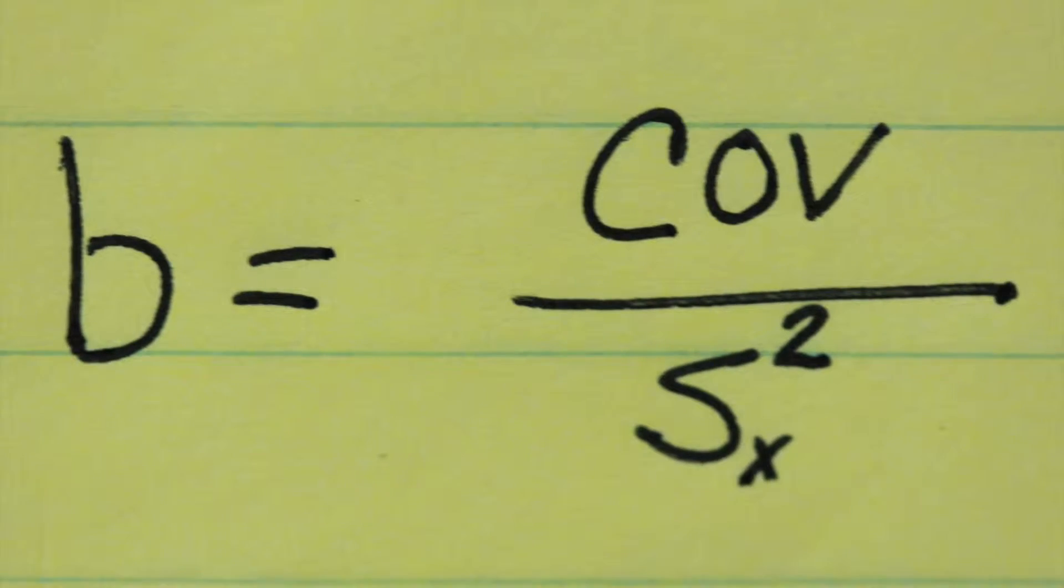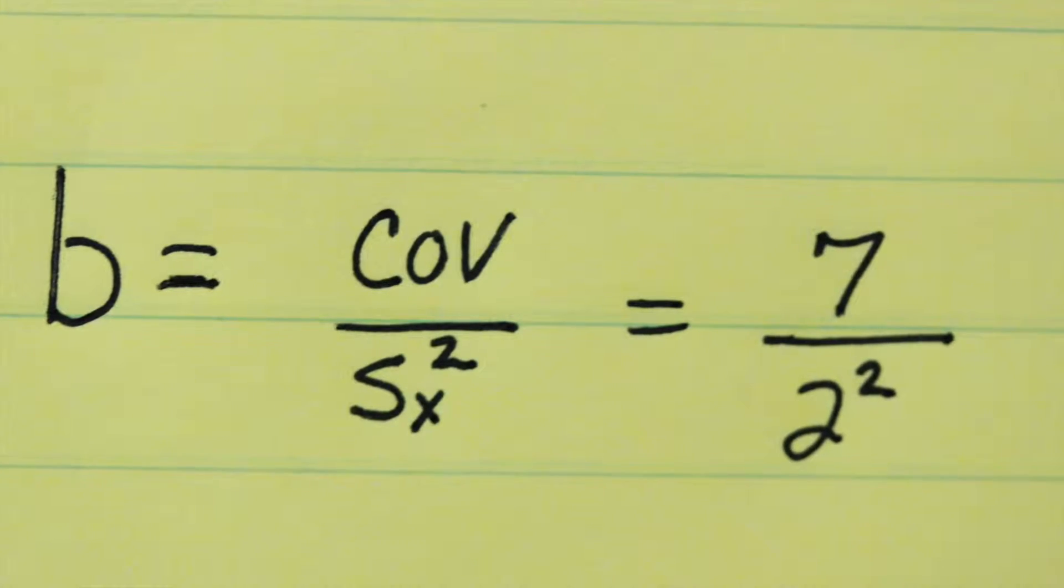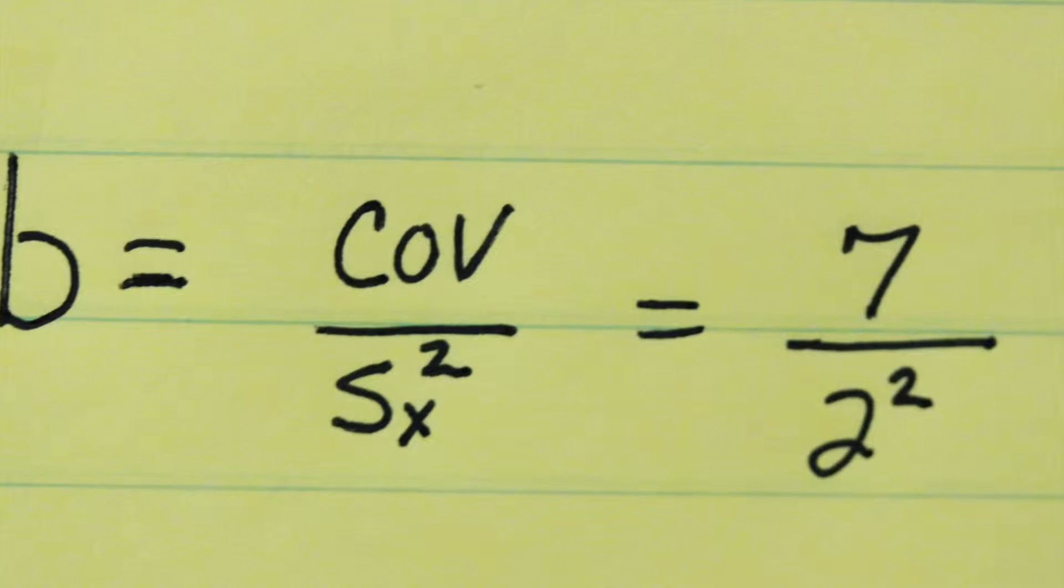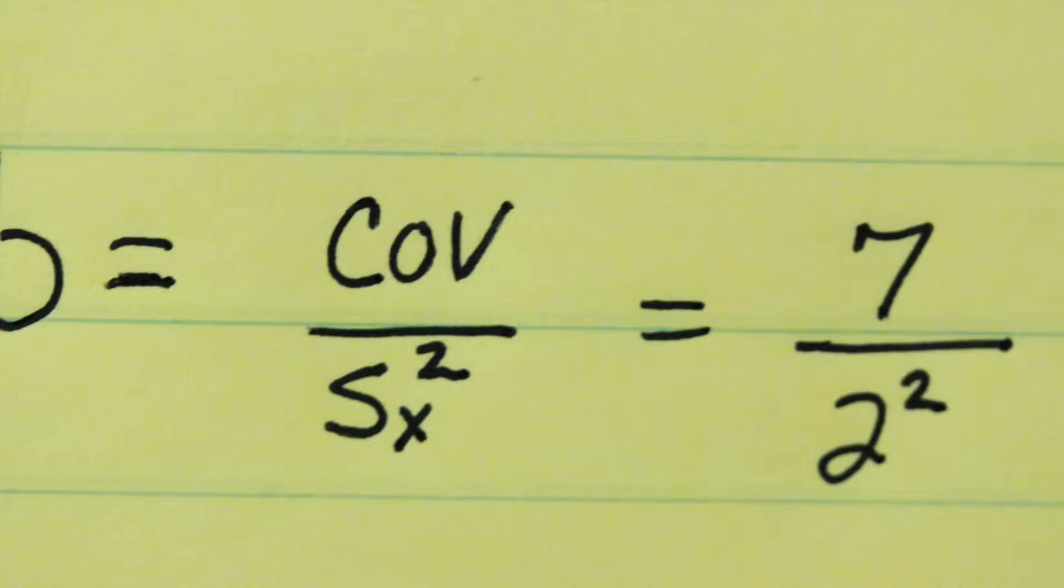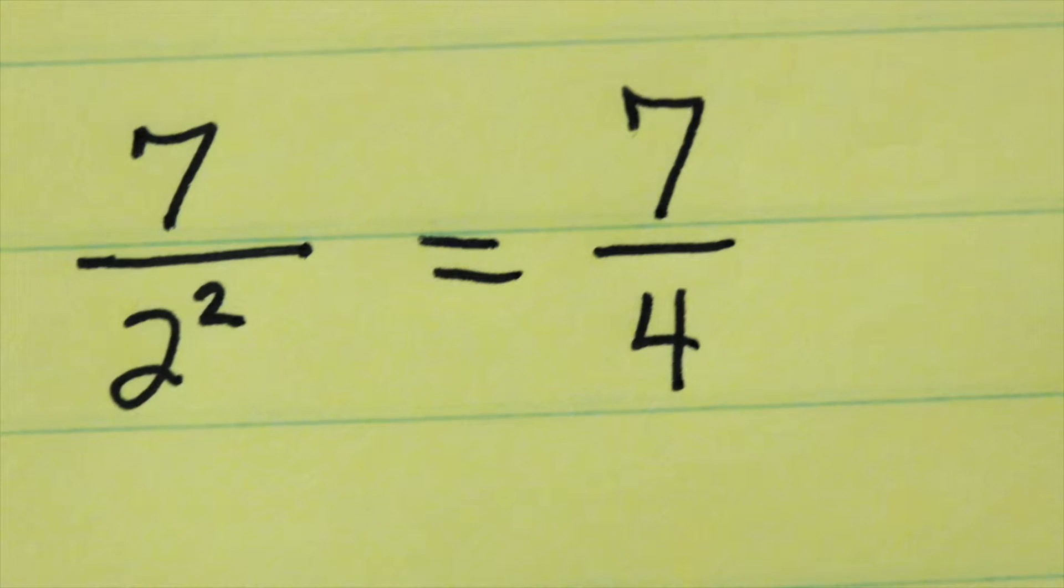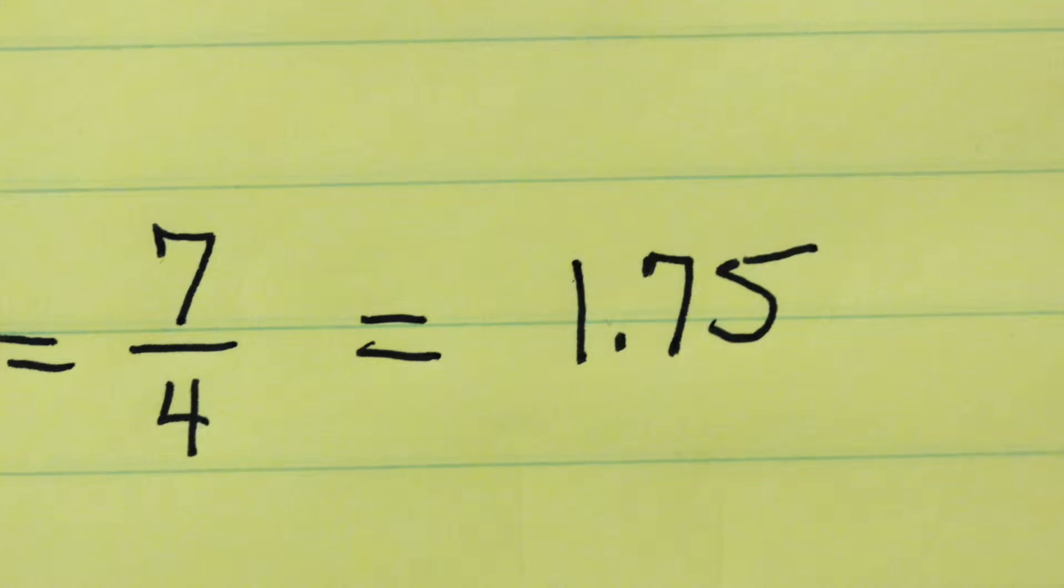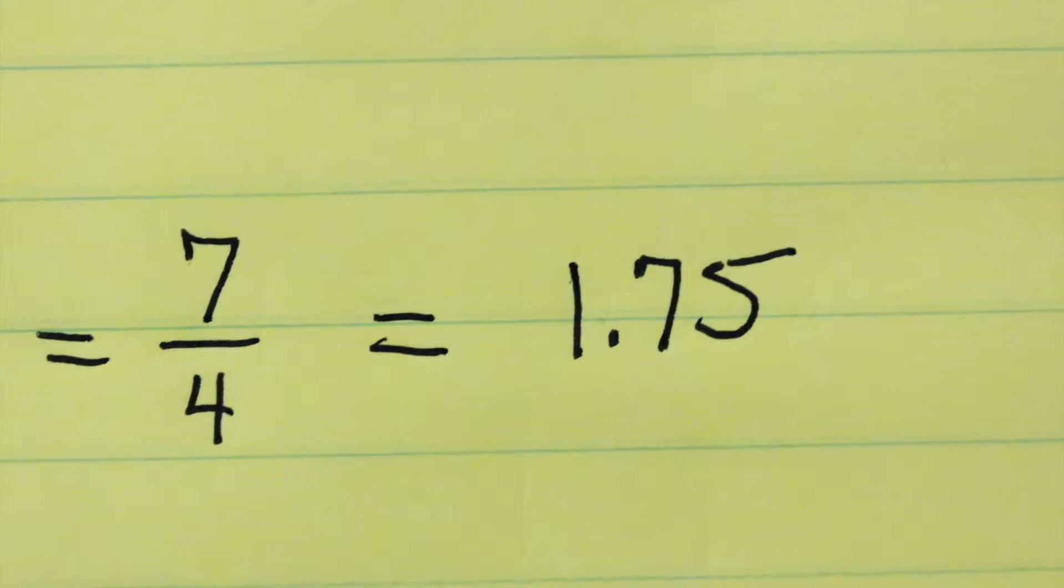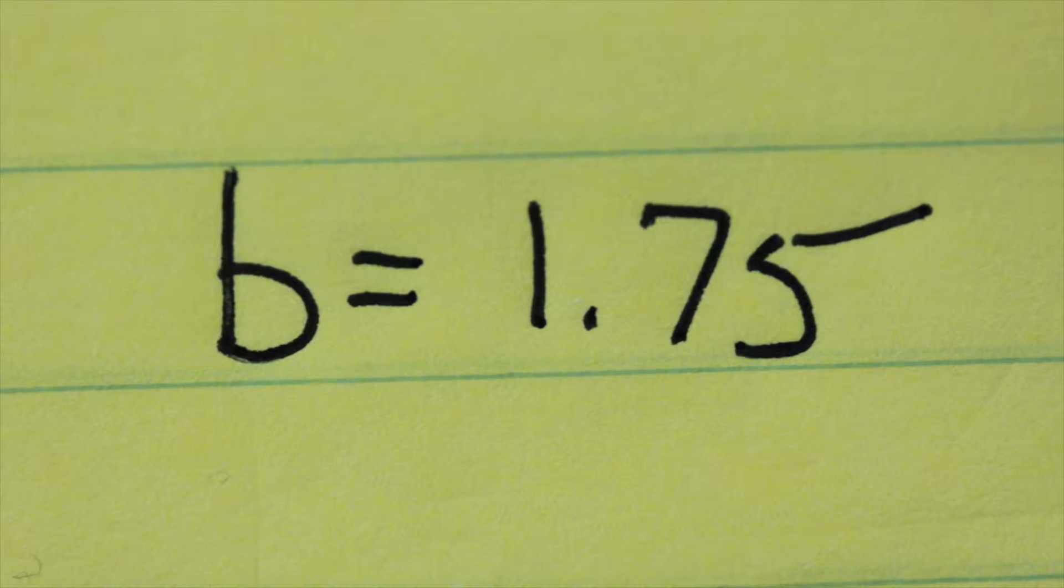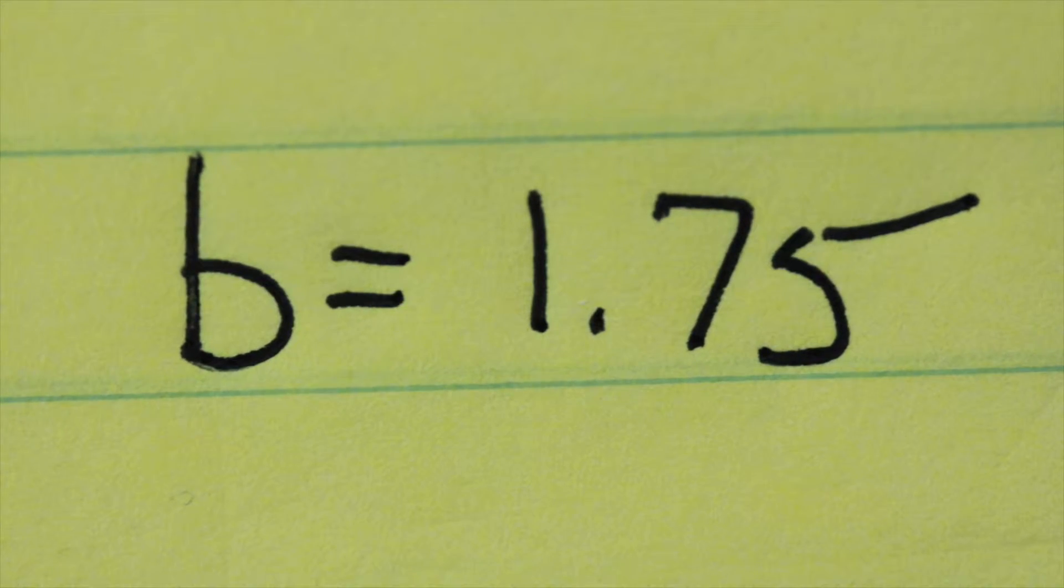Starting with b, we'll use that formula. We'll take the covariance, which is 7, and divide it by the variance of x, which is 2 squared, since variance is the standard deviation squared. So 7 divided by 4 will be our estimate for b, or 1.75. So 1.75 is the estimate of the slope of this equation, the relationship between x and y.